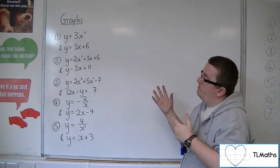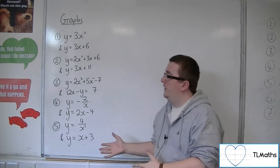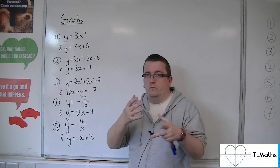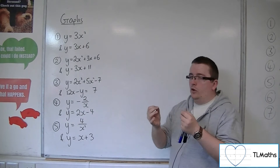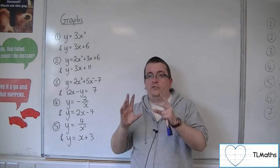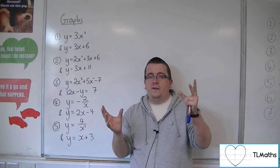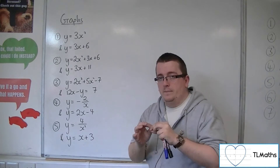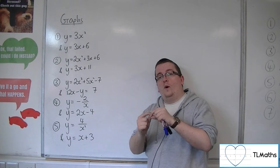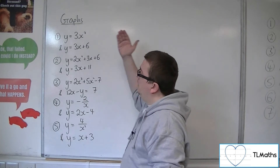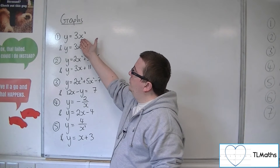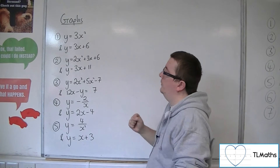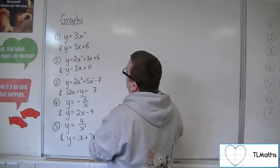When we've got two equations that are y equals some function of x, and the y-coordinates are the same, I should be able to put one equal to the other. So I can put y equals 3x squared equal to 3x plus 6, because the y's must be the same.